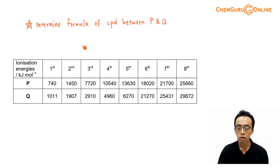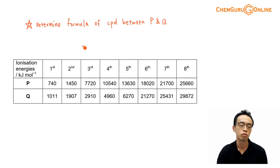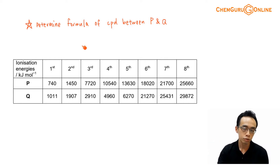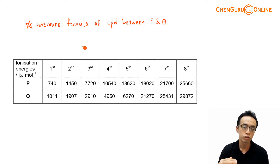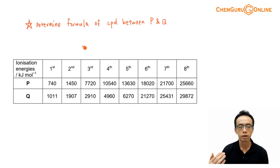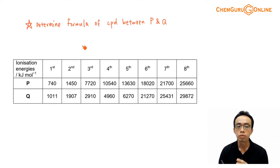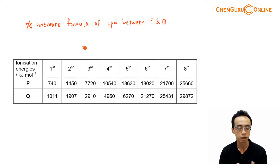Then the second electron becomes a little bit closer to the nucleus, the attraction will be stronger, so it becomes slightly harder to remove the second electron, and so on. As I remove more and more electrons, they get closer and closer to the nucleus, so it becomes more and more difficult, and my ionization energy will increase. But there are certain differences where we encounter a very big jump in ionization energy, and this is what we are looking out for — because a very big jump in IE will mean that there's a change in the principal quantum shell. From there we can deduce how many valence electrons this element has and determine which group it is in.